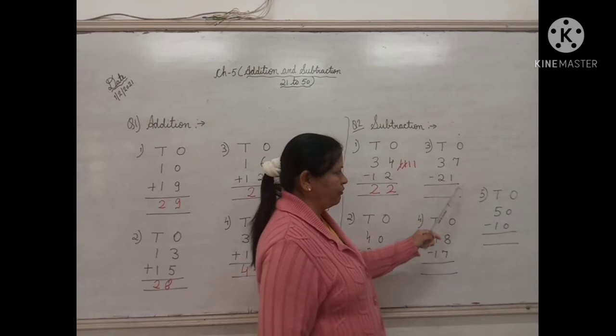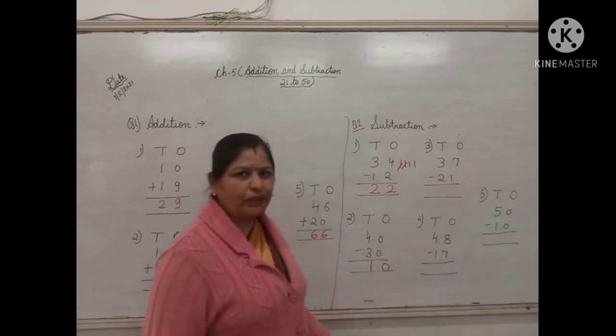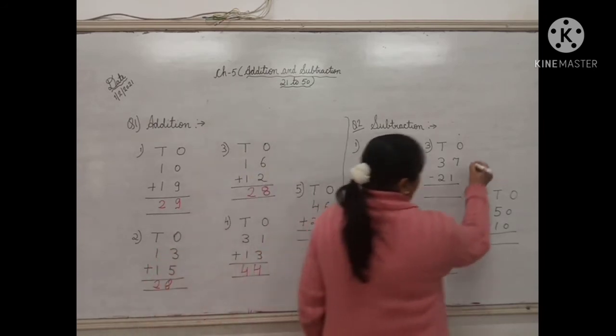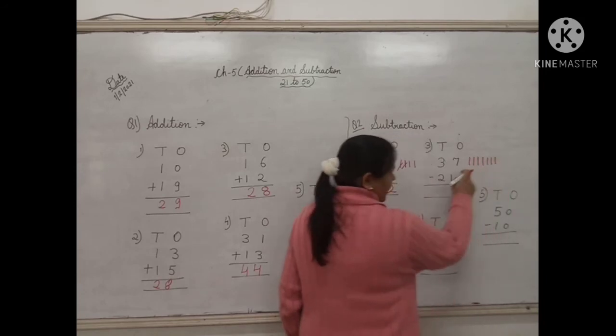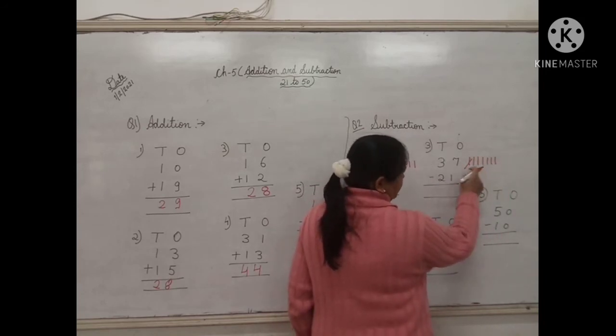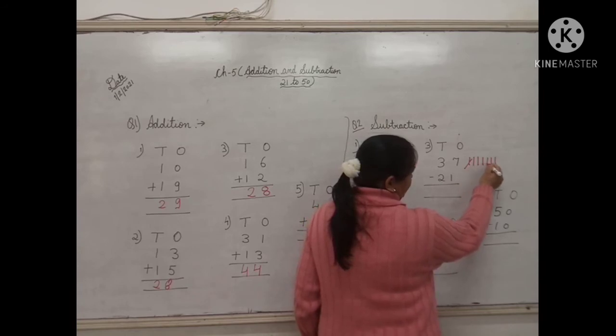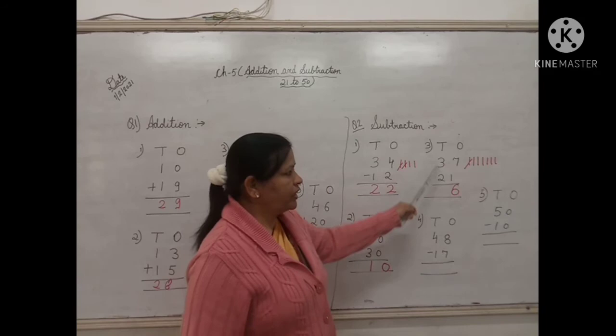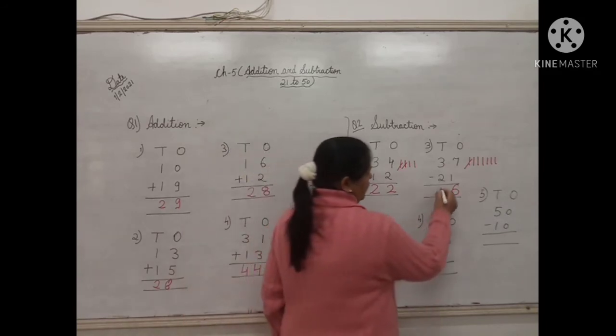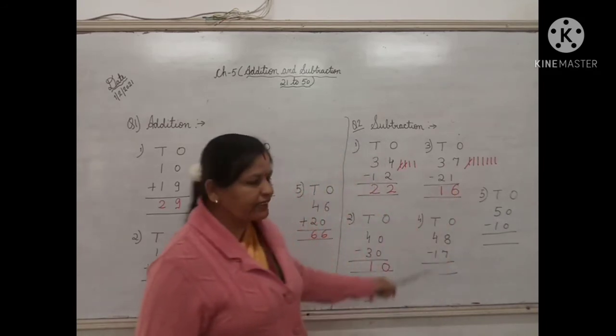Next one. 7 minus 1. 7 minus 1 will be children... Make 7 lines. Cut 1. How much is left? 1, 2, 3, 4, 5, 6. Write down 6. And children, 3 minus 2 will be 1. So the answer is 16.